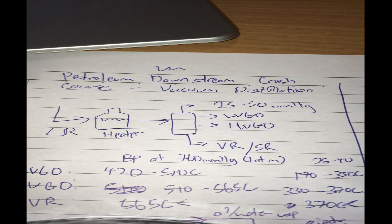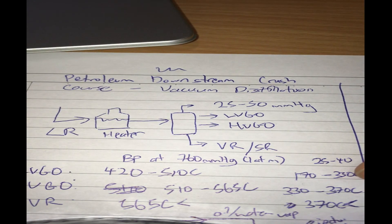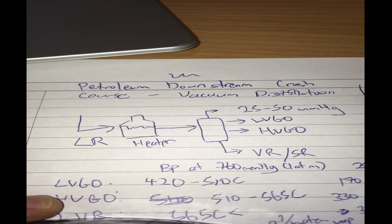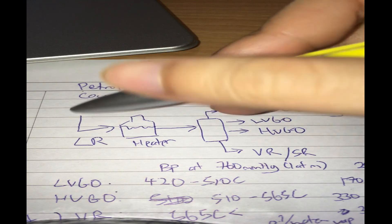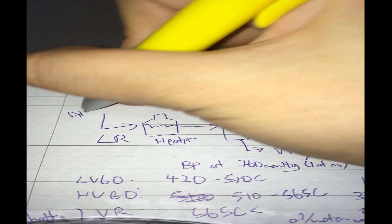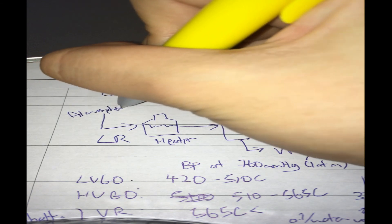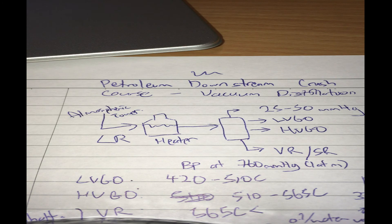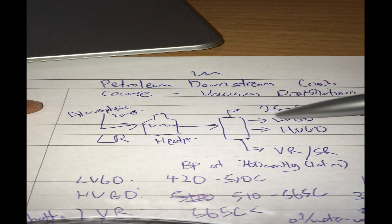Welcome back to petroleum downstream crash course. Today we're going to talk about the vacuum distillation column. In the last video we talked about long residue which came out of our atmospheric distillation tower.